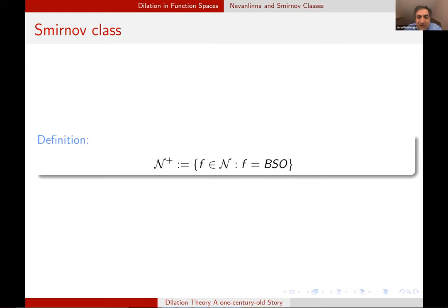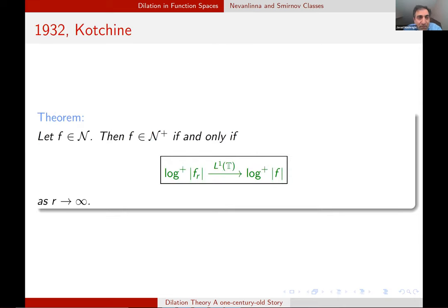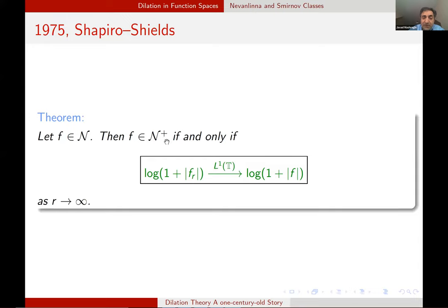This led Smirnov to define the N plus, all elements for which there is nothing, no singular part in the boundary. Just B times S times O. Well, as a definition of N plus, this is good, but there are other characterizations like this one by Koosis. Again, you see the effect of dilation. F is in N plus if and only if we have this convergence in L^1. Log plus of mod F_R goes log plus of mod F in L^1. And we can also use the other quantity log of one plus mod F_R. If it goes to the corresponding quantity on the boundary in L^1, we obtain a characterization of Smirnov class. This is Shapiro Shields characterization.